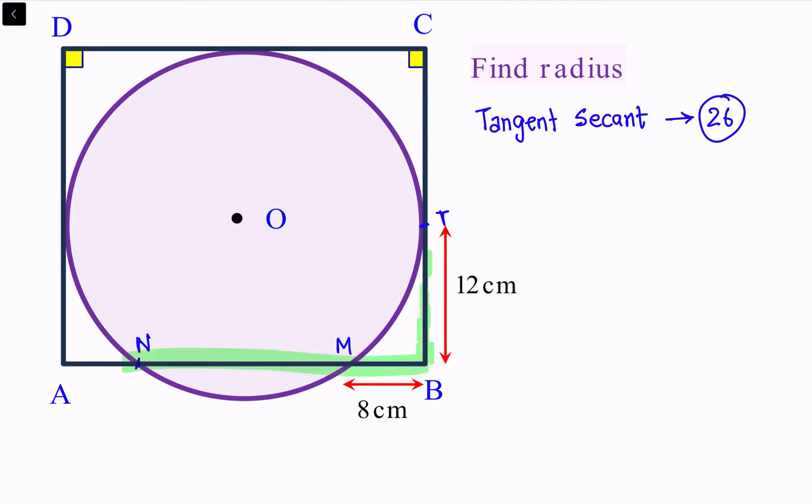Applying tangent secant theorem, we get BT² = BM × BN. Now let's assume this value as X. So we are getting 12² = 8 × (8 + X), or 8 + X = 12 × 12 ÷ 8.